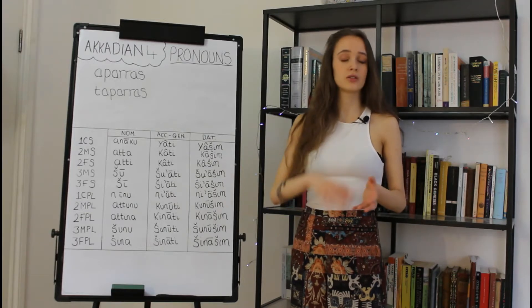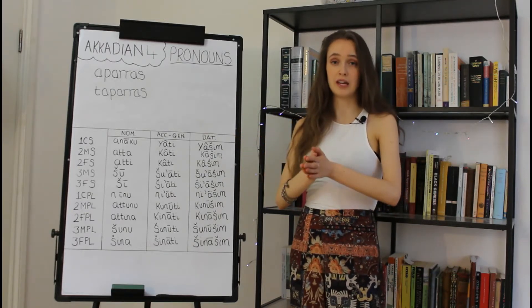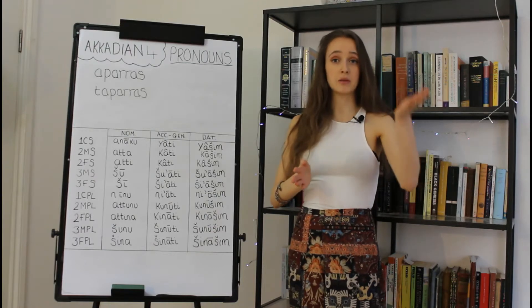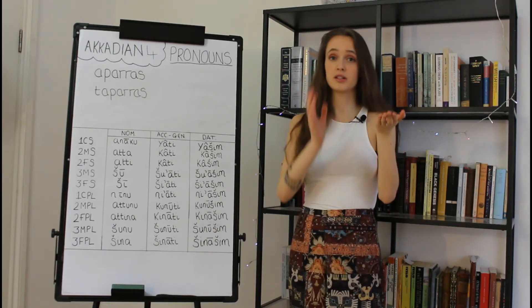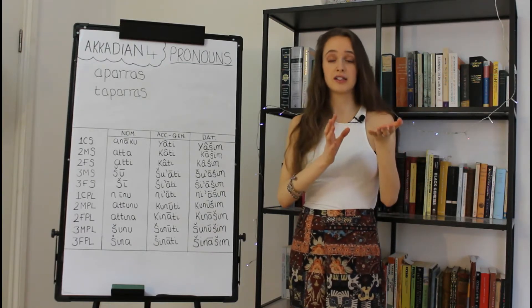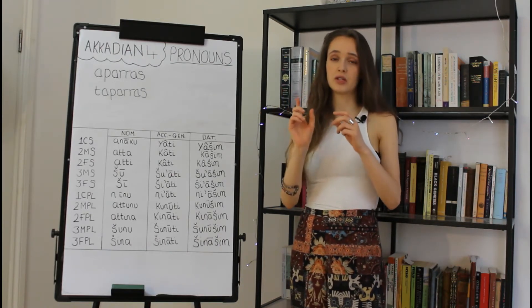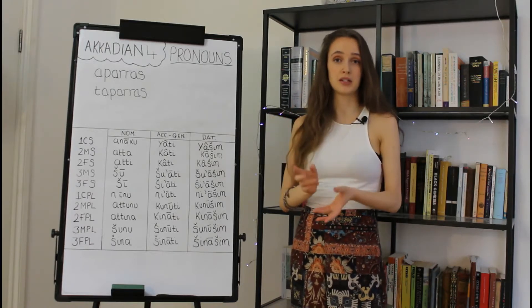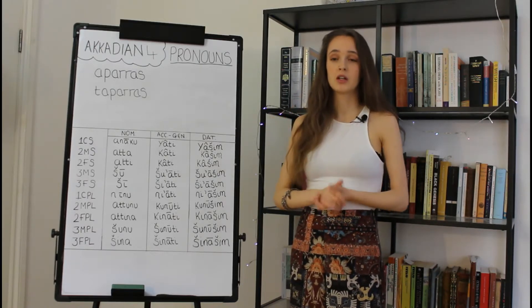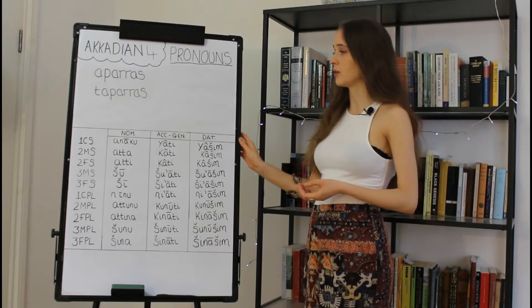The subject of pronouns in Akkadian can be split in two. On the one hand you have independent pronouns — these are whole words which stand alone in a sentence. And then you have pronominal suffixes, which are pronouns that suffix themselves onto the ends of verbs, nouns, and prepositions.